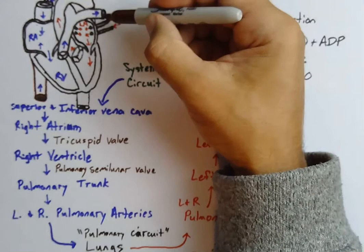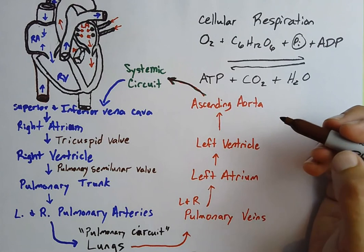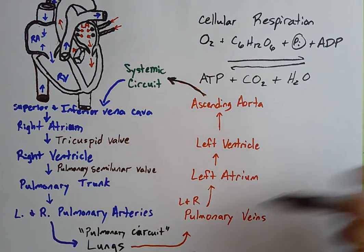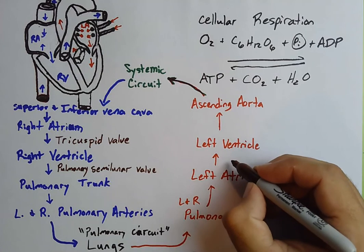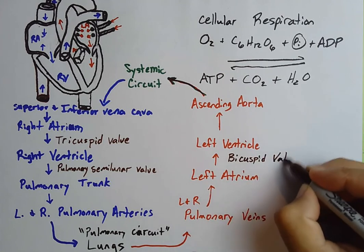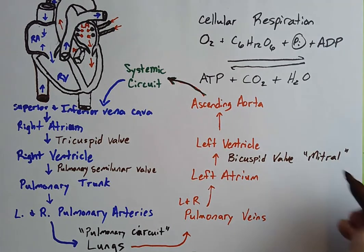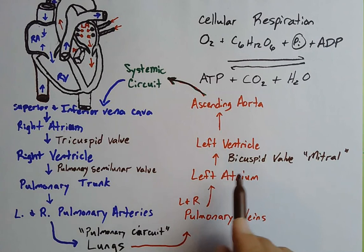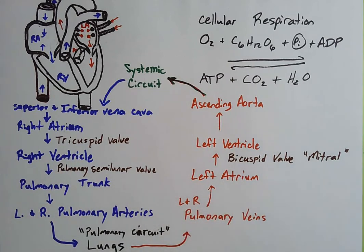As blood enters the left side of the heart from the left atrium into the left ventricle, there's another set of valves. These valves only have two cusps, so we call it the bicuspid valve. In medical scenarios, this is better known as the mitral valve. A way to remember the order is: we always try before we buy — tricuspid comes first, bicuspid comes next.